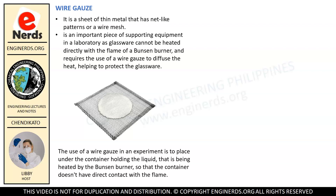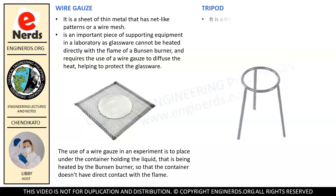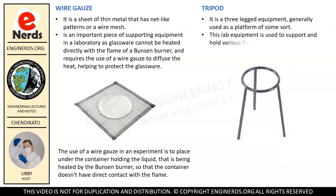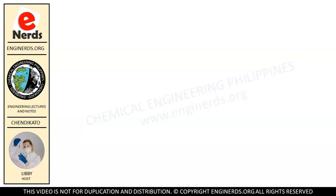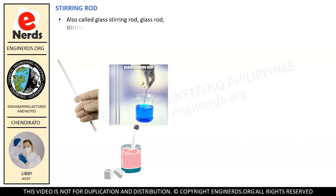As you already know, we have the tripod. It is a three-legged equipment generally used as a platform of some sort. This lab equipment is used to support and hold various flasks, beakers, and other glassware during experiments.